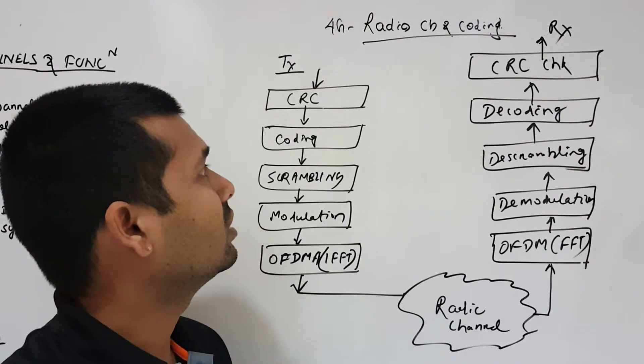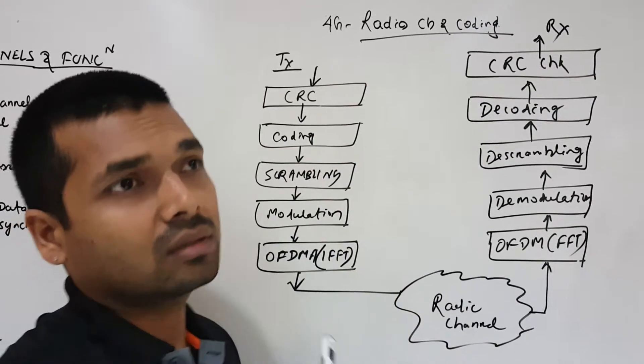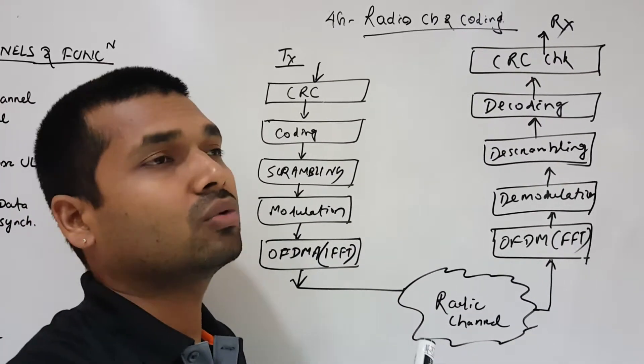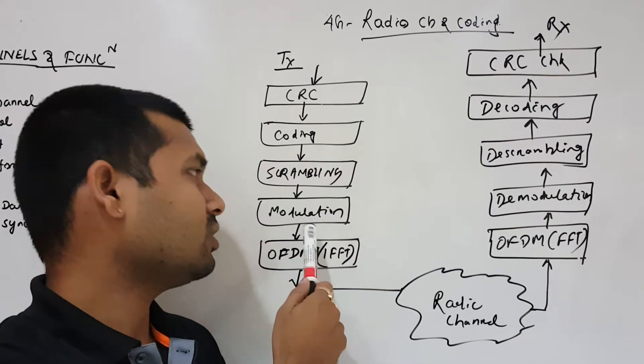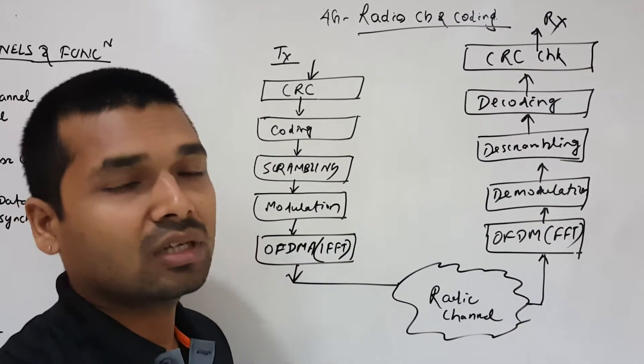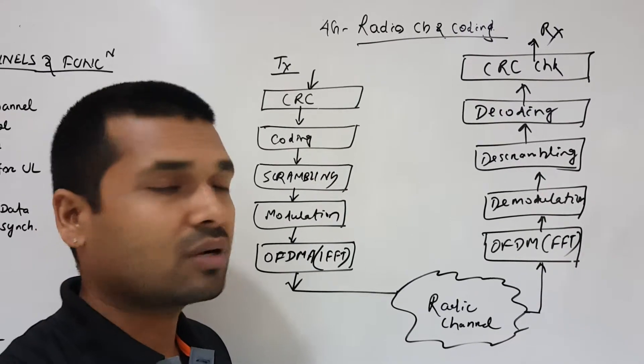The channel coding happens like turbo coding or convolutional coding and the coding rate. Then we do the scrambling. After scrambling, we do the modulation. What kind of modulation to be used? 16 QAM, 64 QAM, QPSK, or BPSK.